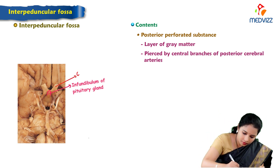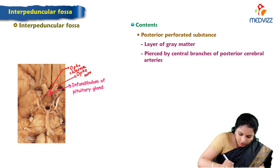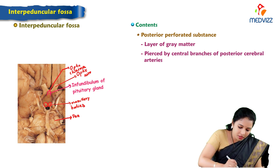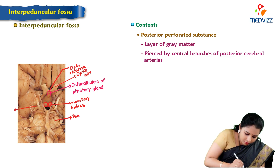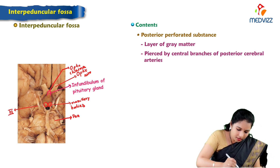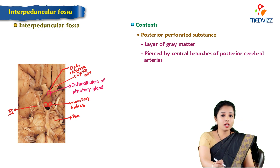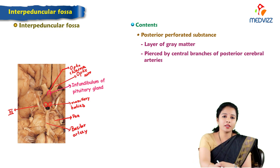These are the optic nerves which cross each other to form the optic chiasma. We can see the pons and its superior border. These rounded bodies are the mammillary bodies. We can also appreciate the third cranial nerve, the oculomotor nerve, arising from the interpeduncular fossa. The other structures around the interpeduncular fossa include the circle of Willis, also called the circulus arteriosus, and the basilar artery. This completes the discussion on the interpeduncular fossa.